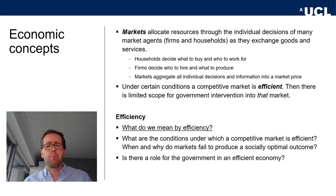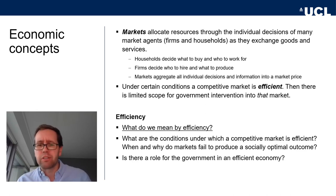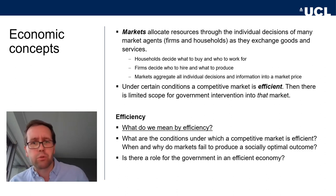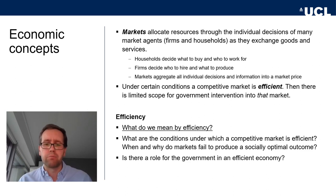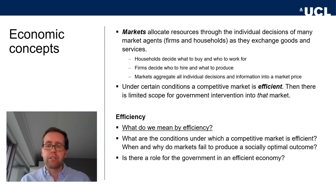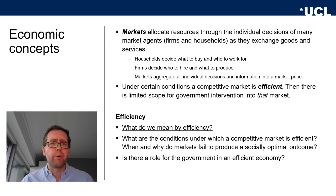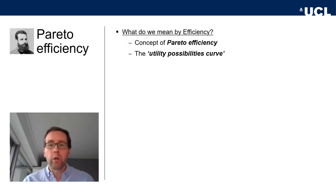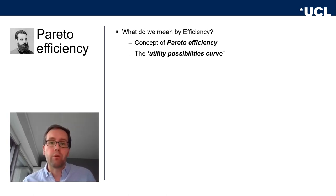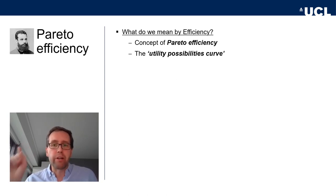But what do we mean by efficiency? What are the conditions under which a competitive market is really efficient? And when do markets fail to produce socially optimal outcomes? Is there a role for government in an efficient economy as well? The first concept we need is Pareto efficiency — named after Wilfredo Pareto, who invented or described this concept.